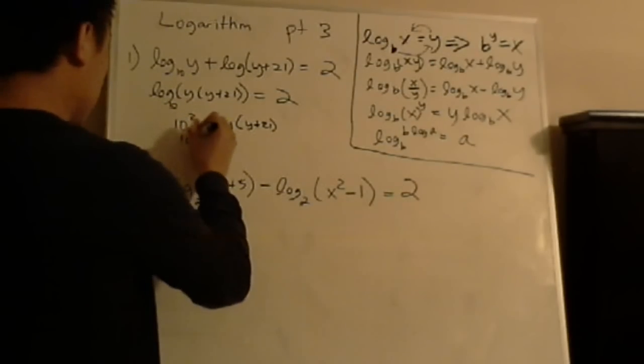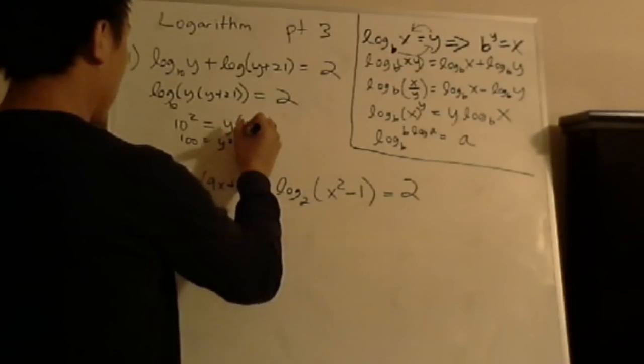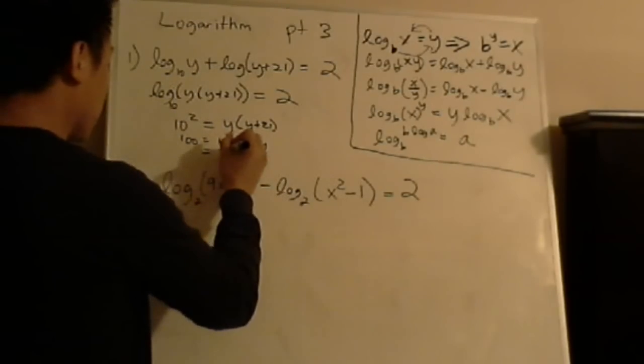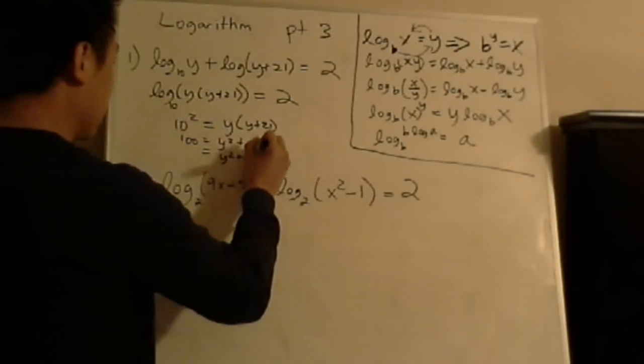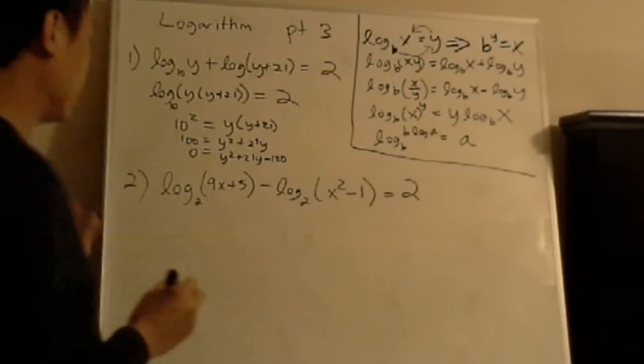So 10 squared is 100 equals to, and let's distribute this, y times y, y squared plus 21y. Let me move 100 to the other side so I can possibly factor it. So that's easy, equals 0.